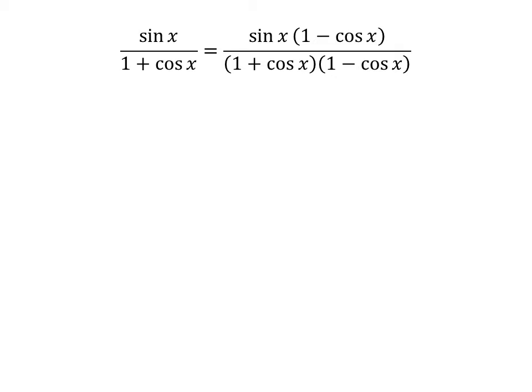Thus, sine of x upon 1 plus cosine of x is equal to sine of x times 1 minus cosine of x, upon 1 plus cosine of x times 1 minus cosine of x.